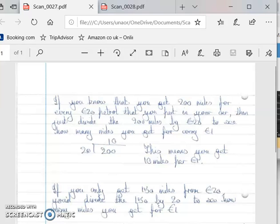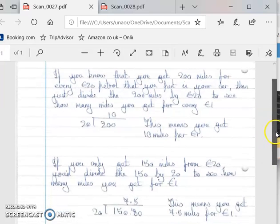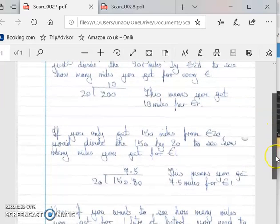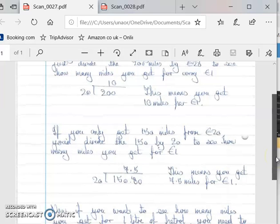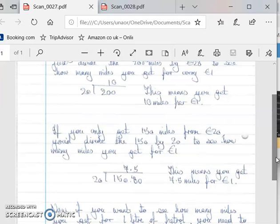And that means you get 10 miles per euro. If you only get 150 miles from 20 euros, so a less efficient car, then you divide that number of miles, which is 150, by your 20 euros again to see how many miles you get for one euro. So here you can see we've divided 150 by 20 and you get 7.5.